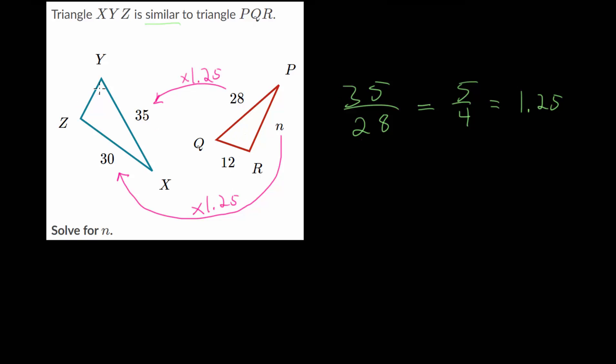And even though we're not concerned about finding this side, we could find it if we want. We would take 12 and multiply by 1.25. So let's do that. We can say we have n, and we're going to multiply it by 1.25. And that will give us 30.